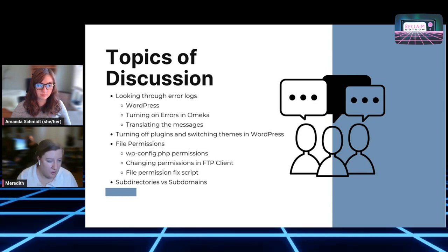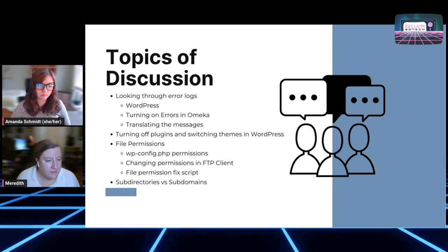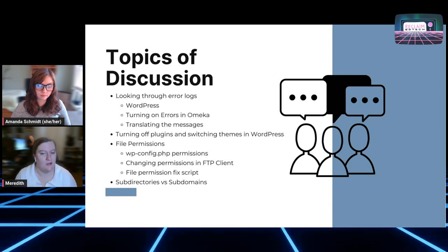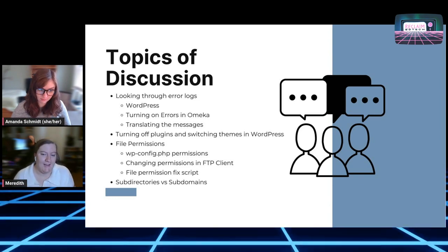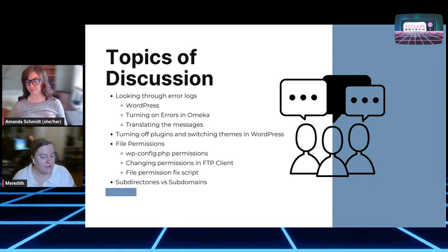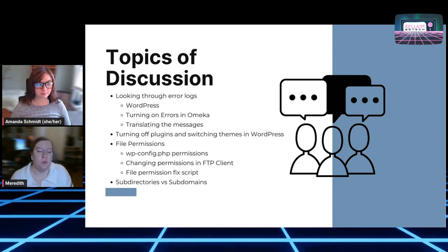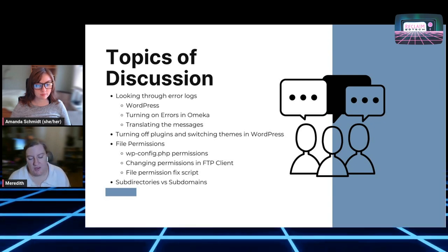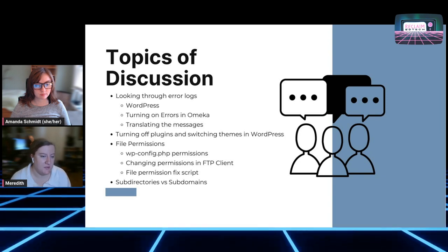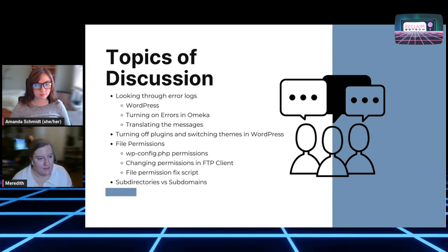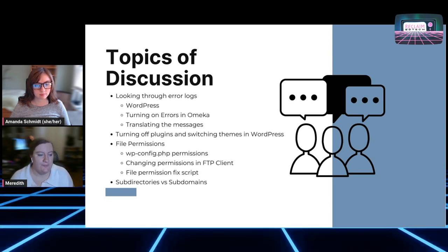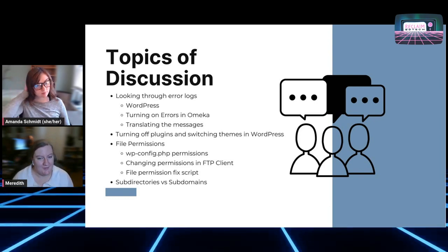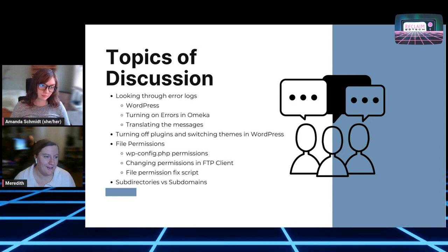We'll also look at turning on errors in Omeka and translating the error messages themselves — sometimes it can be really daunting to see a long string of text within an error message and not know where to go from there. We'll help you look through the errors, understand where the error is pointing to, and what next steps to take, such as turning off plugins, switching themes in WordPress, or updating themes and plugins in Omeka. A lot of times file permissions can cause the site to go offline, even as simple as one file having wrong permissions.